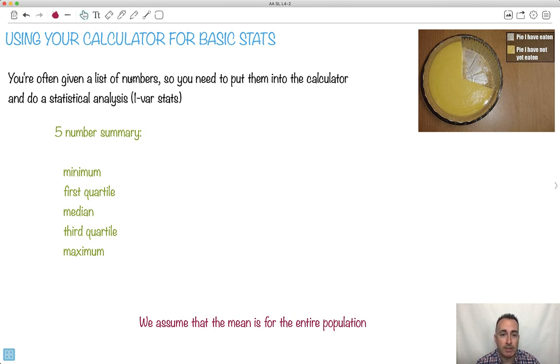So often you're given a list of numbers and the whole idea is to put them into your calculator, your GDC, your graphing display or graphical display calculator, and do some sort of statistical analysis. Sometimes that's what here is known as the five number summary, so your calculator will tell you these things: the minimum, so it'll often call it Xmin, first quartile we call it Q1, median it would just be called median but remember that's also Q2, we have Q3, we have the maximum which should be called Xmax. Now the calculator also tells you some other things, it turns out it'll tell you the mean.